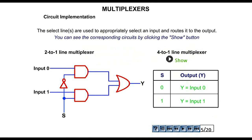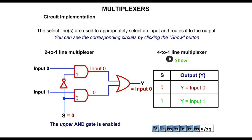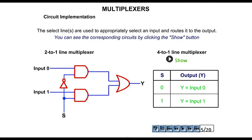When S is equal to 0, the input goes to the upper AND gate — the upper AND gate is enabled. This means input 0 has a path directly to the output, as you can see here.